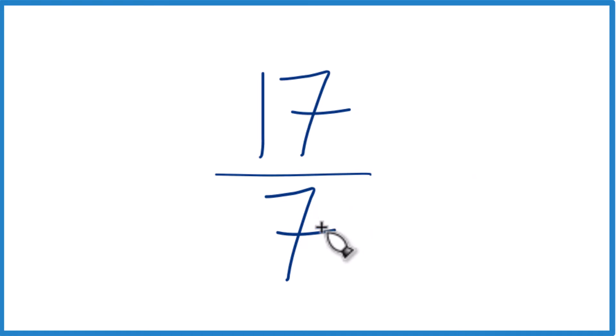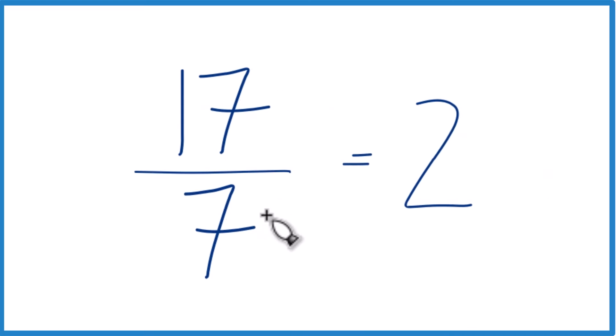To do that, we take the denominator and see how many times it goes into the numerator. 7 goes into 17 two times, because 3 times 7 is 21, that'd be too much. So 7 times 2 is 14, and we have 3 left over.